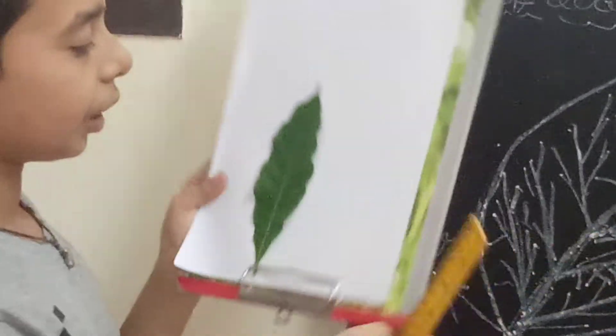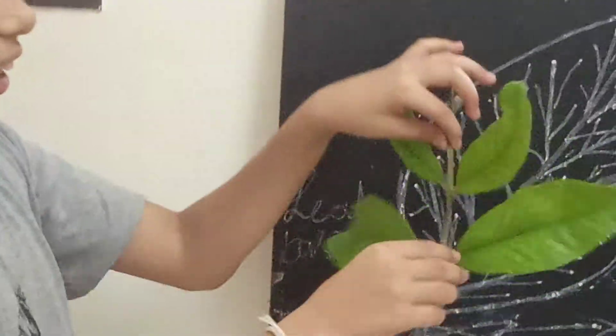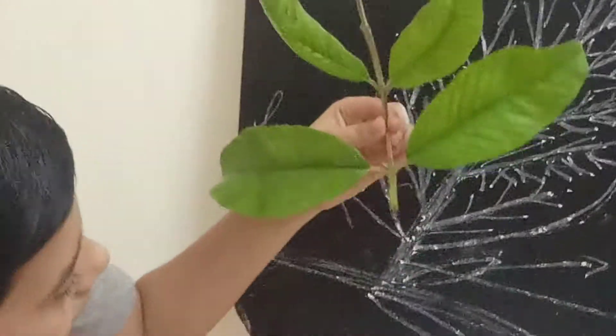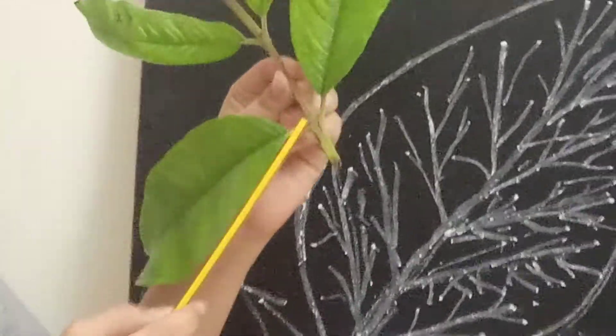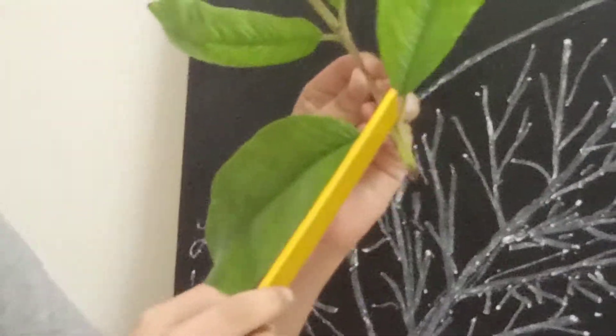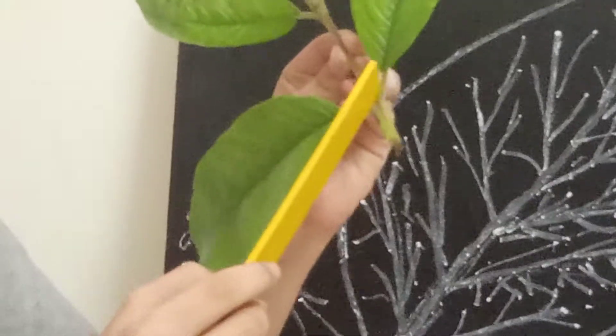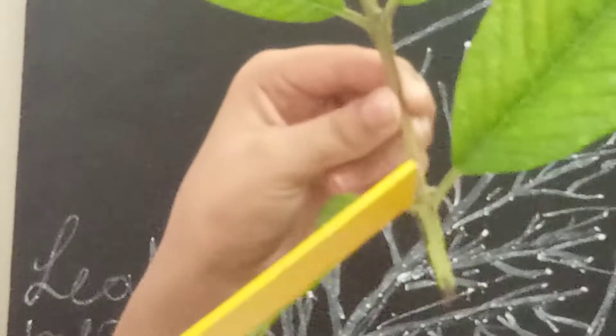Stipule. I will show you this. See here — stipule is a small leaf-like structure that comes at the base of the petiole. See here: when the leaf starts, it comes. This is only the stipule.